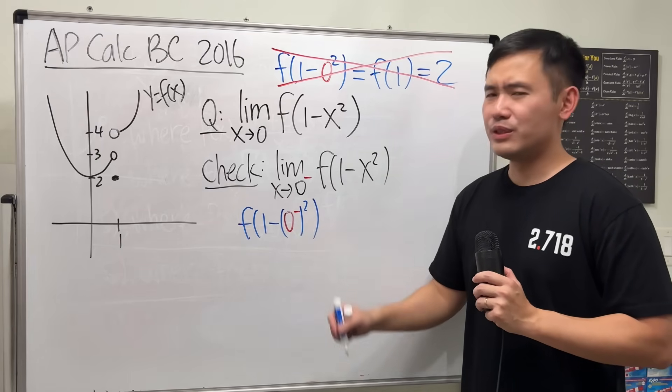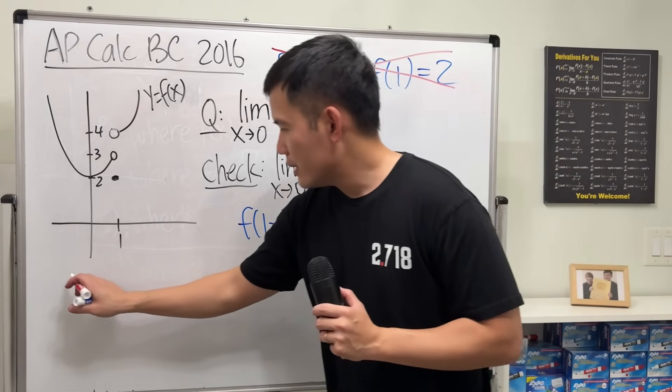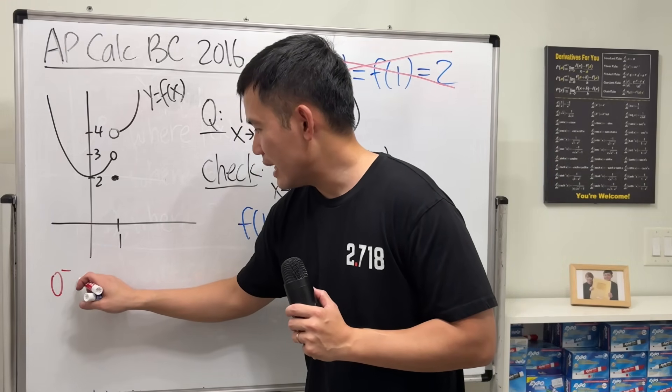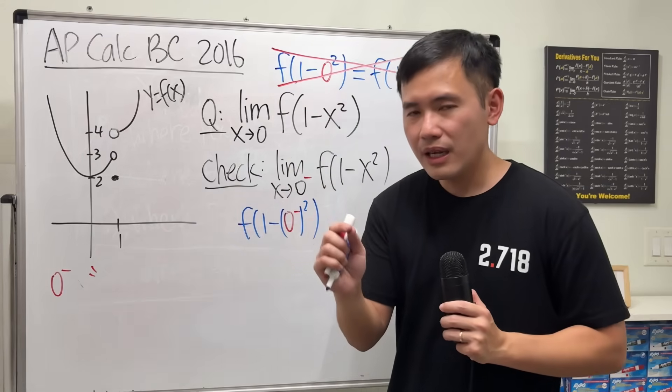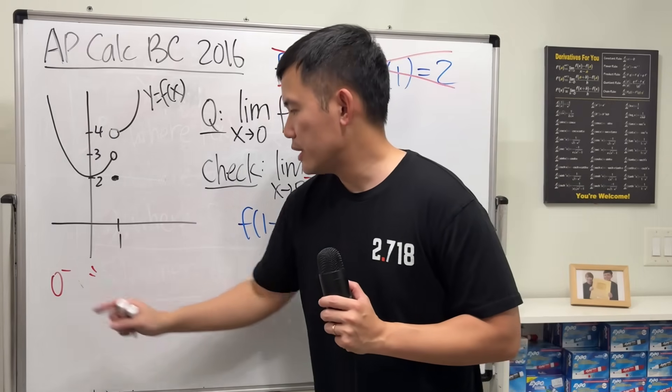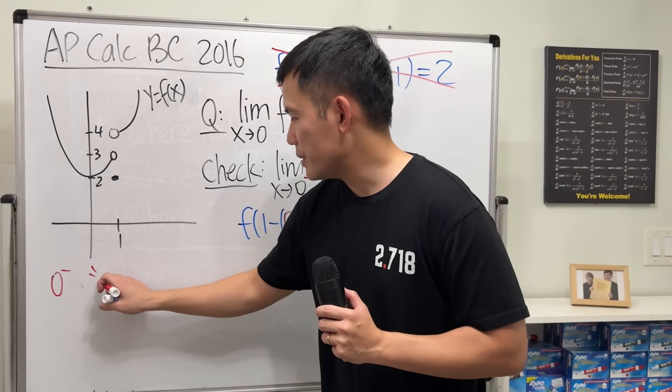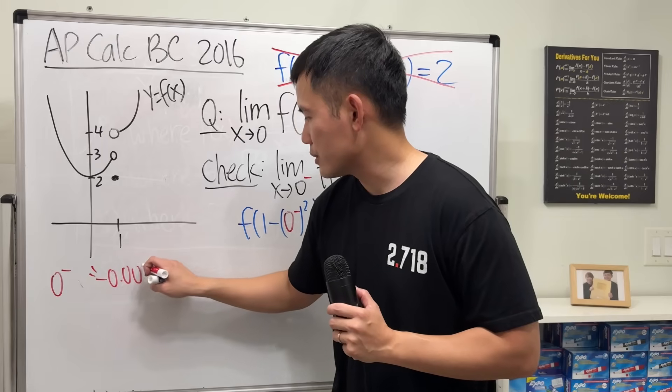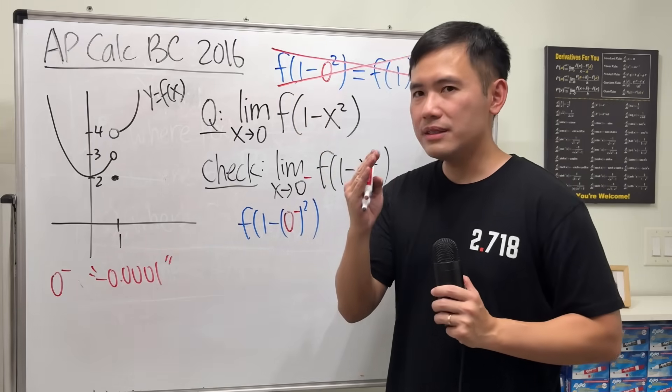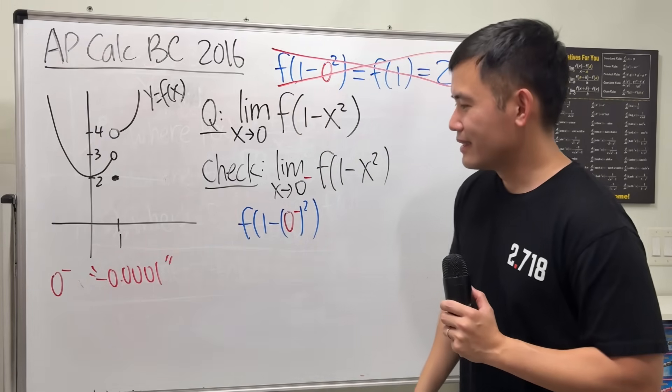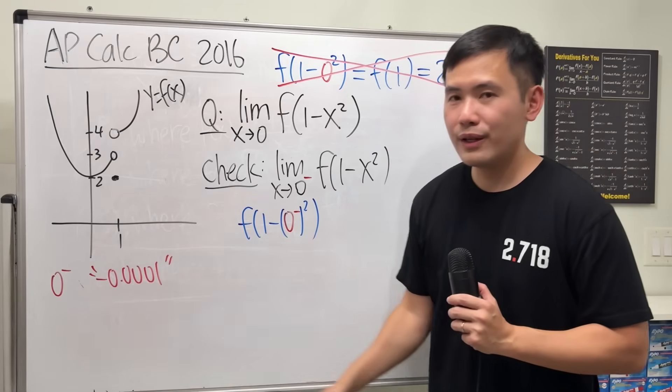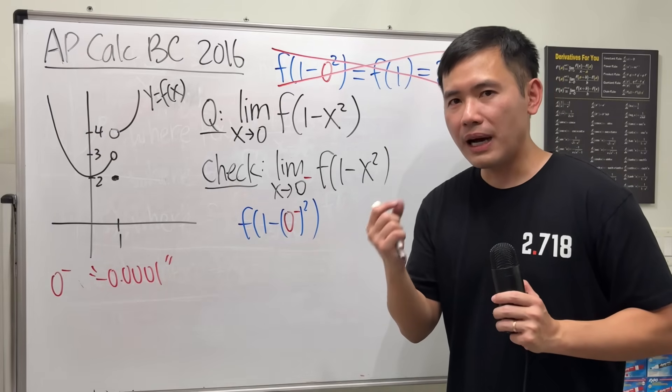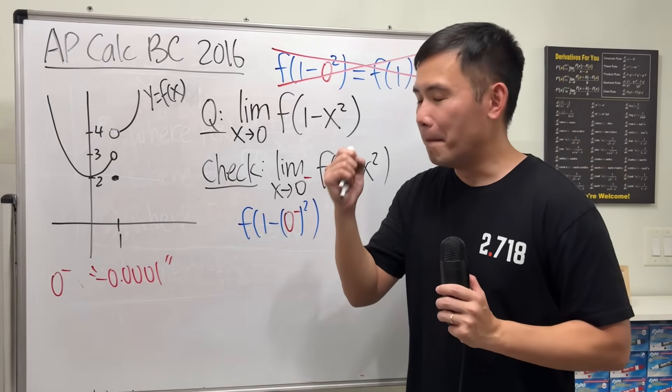Now, what exactly is 0⁻? You can just think about 0⁻ as like, just think about this as a number that's a little bit less than 0. Well, in this case, it would be like negative 0.0001. That's a little bit less than 0. So, in this case, when you square this right here, you get what?